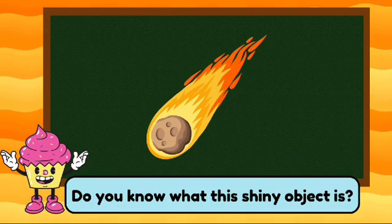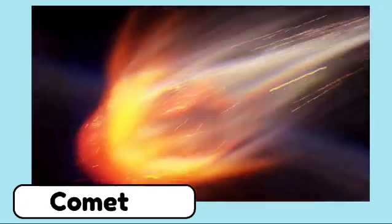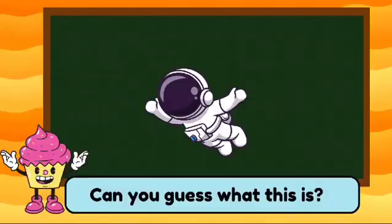Do you know what this shiny object is? This is a comet. It has a bright tail behind it.